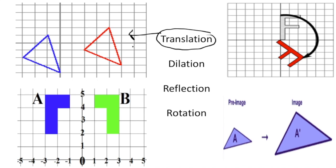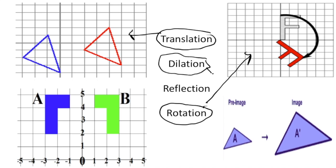The second one shows the letter F being rotated in a circular motion, so this one is a rotation. The third one shows a pre-image and an image where the triangle is increased in size — it's the same shape but a different size — so this is a dilation.